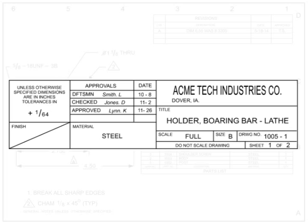The remaining areas of the title block can be tailored for other information such as material, heat treatment, finishes, weight, general specs, and standards. This may also include higher assembly or superseding information, as well as other boilerplate information such as copyright information, export control information, design activity, and manufacturing information.